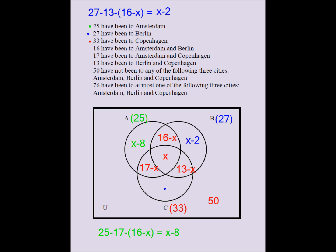Similarly, we find the Copenhagen-only region. The Copenhagen circle sums to 33; subtract the Amsterdam-Copenhagen football (17) and the Berlin-Copenhagen overlap (13 minus x). So Copenhagen-only equals 33 minus 17 minus (13 minus x), which equals x plus 3. Checking: (x plus 3) plus (13 minus x) plus 17 equals 33. And for Berlin: (x minus 2) plus (13 minus x) plus (16 minus x) — wait, 14 plus 13 equals 27. Confirmed.